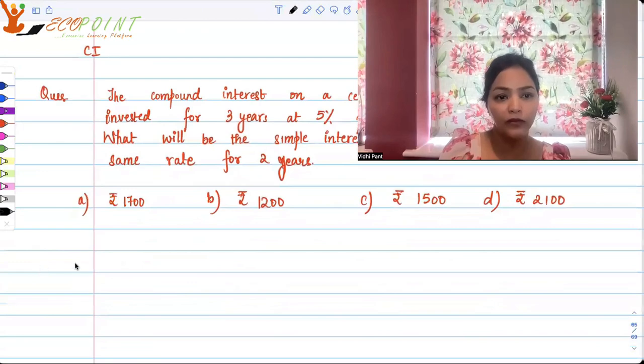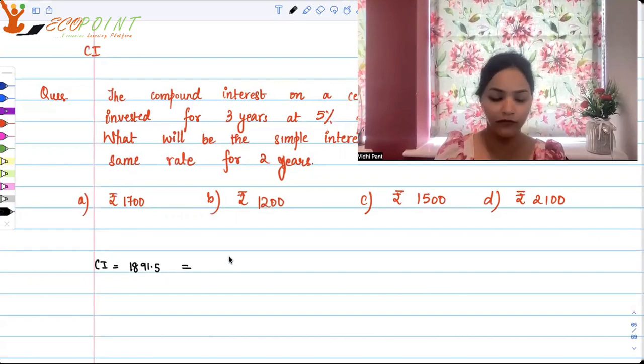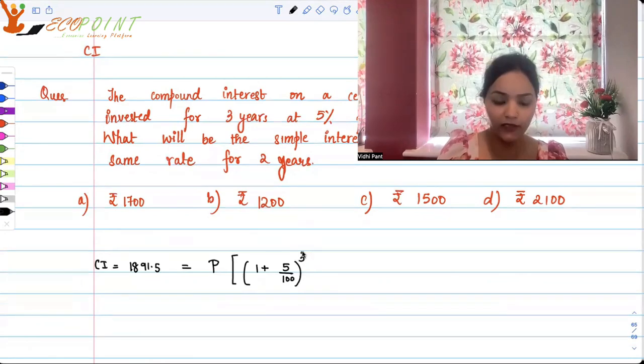So what we know is 1891, right? 1891.5, that's our compound interest. And by the formula of compound interest, it is basically principal multiplied by 1 plus the rate, the rate is 5, so 5 upon 100 to the power years, so 3 years, minus 1.